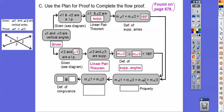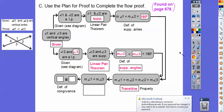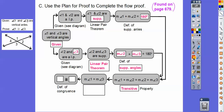Since angle 1 and 2 are supplementary, angle 1 plus angle 2 equals 180. Since angle 2 and 3 are supplementary, angle 2 plus angle 3 equals 180. We substitute 2 plus 3 in for 180, giving us angle 1 plus angle 2 equals angle 2 plus angle 3 — substitution or transitive property. Then we subtract the measure of angle 2 from both sides — subtraction property — leaving us with angle 1 congruent to angle 3, by the definition of congruency.